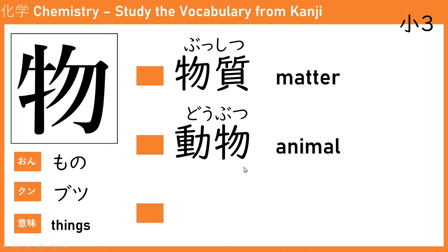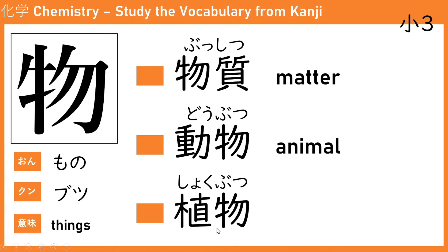We also have 植物 (shoku-butsu). 植 means plants, so if you plant things it means plants. So we have animal — 動物 — and plants — 植物.